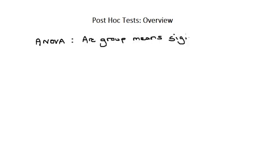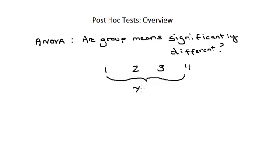An ANOVA will tell us if group means are significantly different, but it won't tell us which specific means are different. For example, it doesn't tell us if there's a difference between groups 1 and 2 or 2 and 4. For that we need to run a post hoc test.